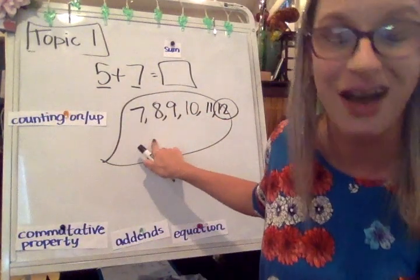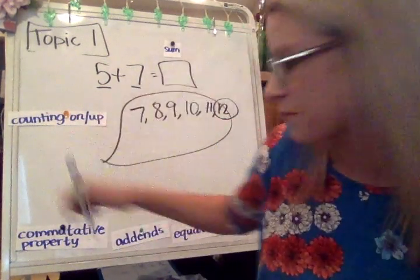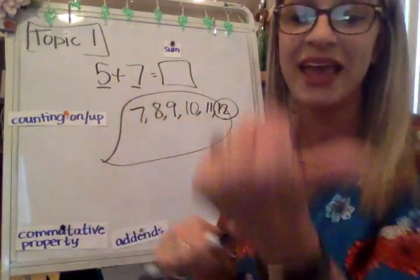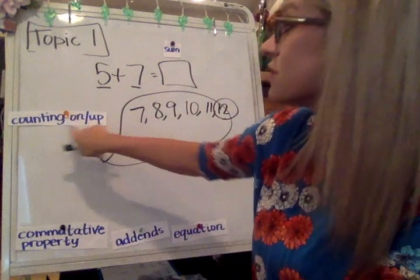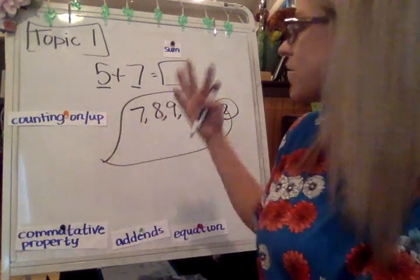So 12 would be what the answer is. So 7, it's much easier for me not to write this and to be thinking it in my head. So 7, 8, 9, 10, 11, 12. And there you go. So that's how you do counting on or counting up.